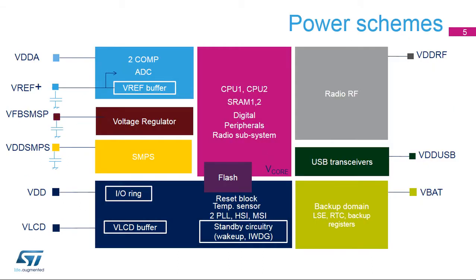STM32WB devices have several independent power supplies which can be set at different voltages or tied together. The main power supply is VDD, supplying all IOs, the reset block, temperature sensor, all internal clock sources, the standby circuitry including wake-up logic and independent watchdog, as well as the radio. VDD is monitored by the BOR circuitry. VDD-SMPS supplies the switch mode power supply step-down converter. Its output, VFBS-MPS, supplies the CPU with most digital peripherals and the SRAMs. The flash memory is supplied by both VFBS-MPS and VDD.